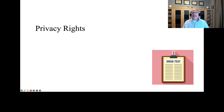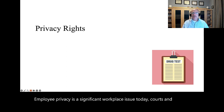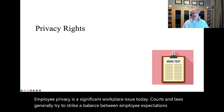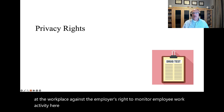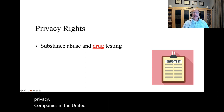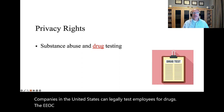Employee privacy is a significant workplace issue today. Courts and laws generally try to strike a balance between employee expectations of privacy at the workplace against the employer's right to monitor employee work activity. Here are some of the most important current issues in employee privacy. Companies in the United States can legally test employees for drugs. The EEOC only allows drug testing of job applicants after they have received conditional offers of employment.